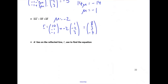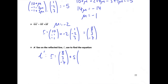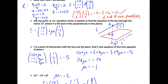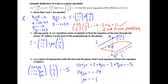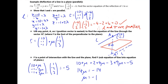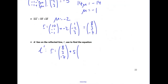Now I've got enough to write the equation of L dash. I've got a point it passes through — (8, 3, minus 7), the reflected point — plus a constant parameter s times the same direction vector as the original line (minus 4, 1, 2), because these are parallel lines.